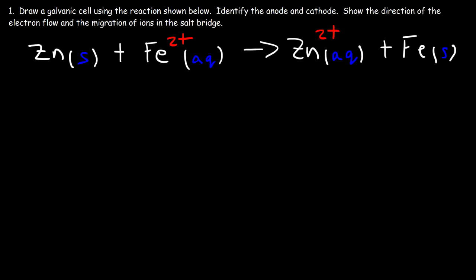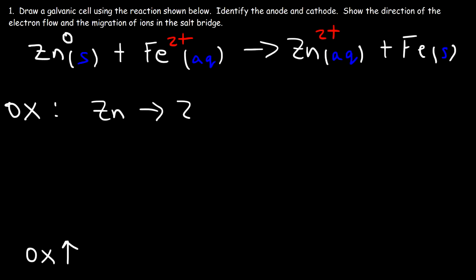The first thing we need to do is separate this overall reaction into two half reactions. The oxidation state of zinc changes from zero to two plus, so the oxidation state of zinc is increasing. Whenever the oxidation state goes up you're dealing with an oxidation reaction. If the oxidation number goes down you're dealing with a reduction reaction. So zinc is associated with oxidation — it ionizes into the zinc 2+ cation and loses two electrons. Oxidation is always associated with a loss of electrons.